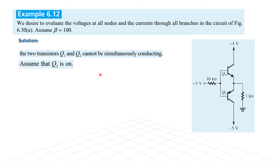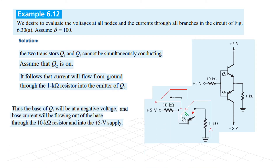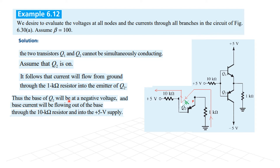Let's assume that Q2 is conducting. If this one is conducting, it follows that the current will flow from ground through the 1kΩ resistor into the emitter. The current will flow from ground because this is conducting, so it will go to the base. Thus the base of Q2 will be at negative potential, meaning the base current will be flowing out of the base.